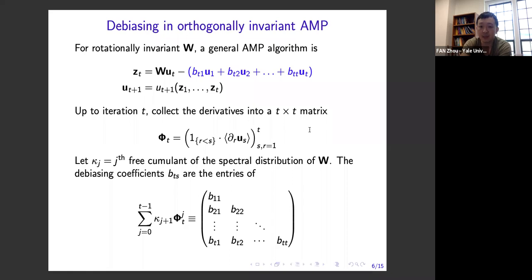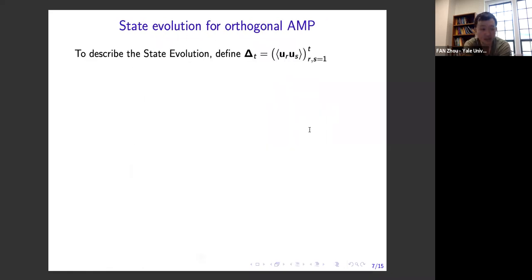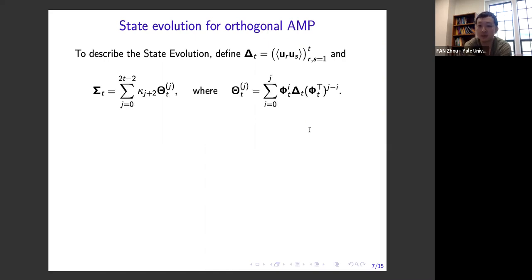If you apply the debiasing in this way, this AMP algorithm is rigorously characterized by a Gaussian state evolution. To describe the state evolution: define a matrix delta consisting of pairwise inner products between iterates u_R and u_S, and a second matrix series sigma with coefficients given by the spectral free cumulants of W multiplied by matrices theta_j that are polynomials in phi and delta.